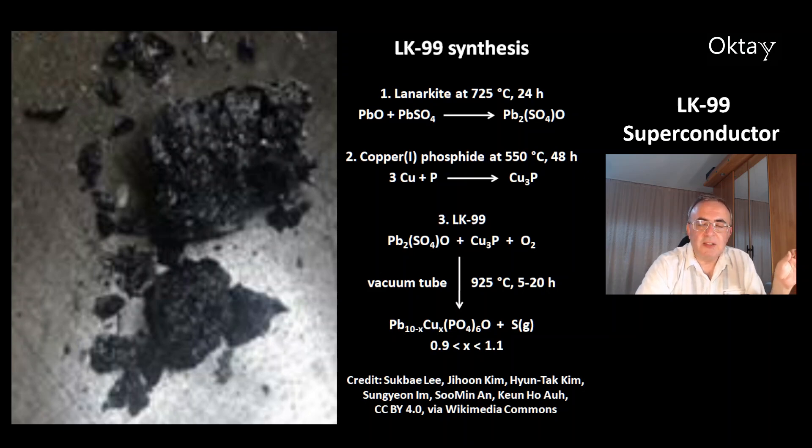The second step is the synthesis of copper(I) phosphate at 550 degrees Celsius from the elements. The third step is the synthesis of LK-99 from lanarkite plus copper phosphate plus oxygen in a redox reaction in a vacuum tube at 925 degrees Celsius for 5-20 hours.